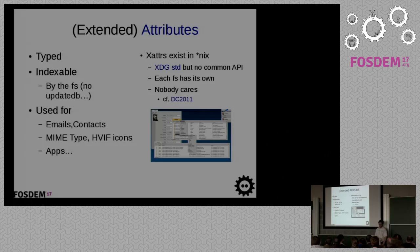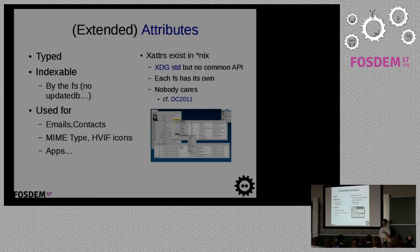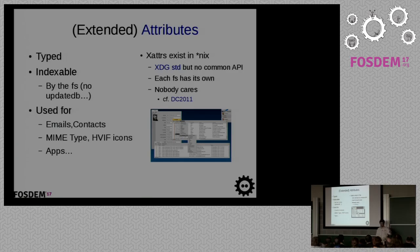We also make heavy use of extended attributes — we just call them attributes — but ours are typed. You can say it's a string, an integer, a float, or binary. Unlike on Linux and most OSes where it's just a name and a value, the fact that they're typed means the file system can also index them. BFS, which is the file system we use, can index those attributes and make them searchable much faster than maintaining a separate database. It's used for emails, contacts, and so on.